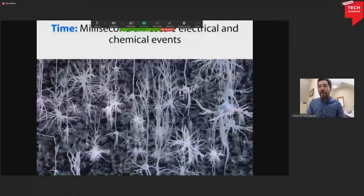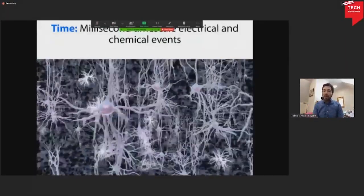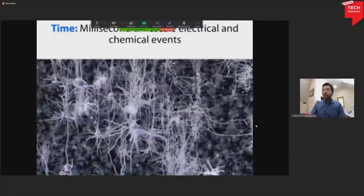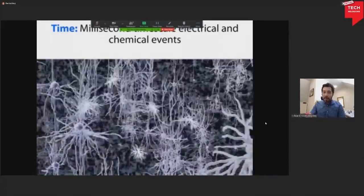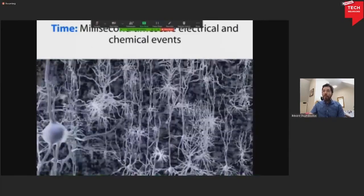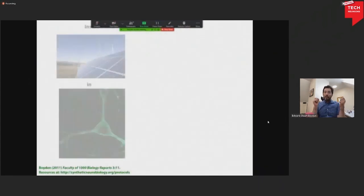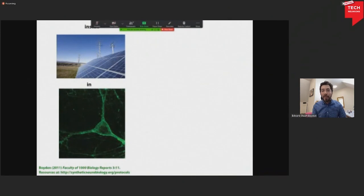As mentioned earlier, brain cells use these high-speed electrical events to compute. How can we actually understand them? But one idea is, what if you could control individual brain cells? Now there are many ways to do that. You can use electricity, for example, or you could try to use pharmacology, but those are not very precise. And so we started wondering, could you actually control brain cells with light? How would you do that?